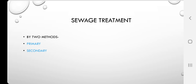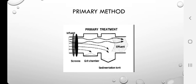There are basically two methods for sewage treatment used by municipalities: the primary method and the secondary method. In the primary treatment, the process is mostly mechanical and concerned mainly with the removal of coarse solid material from sewage water through filtration and sedimentation. The influent — the incoming sewage water — is filtered through large screens as shown.